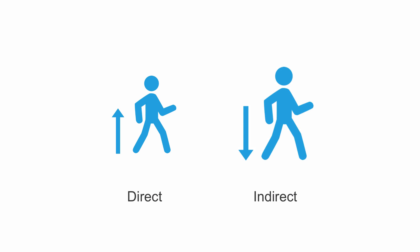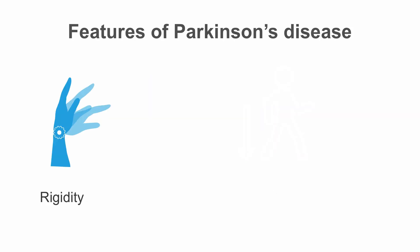This excess globus pallidus interna activity suppresses the thalamocortical tracts, which normally promote activation of the motor neurons and thus the corticospinal tract. Parkinson's disease is classically associated with a series of movement issues.